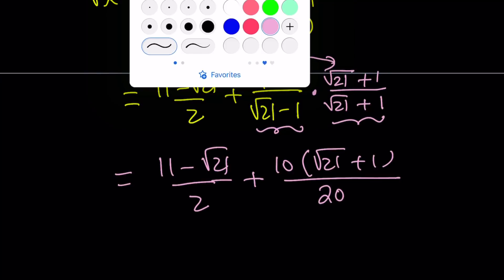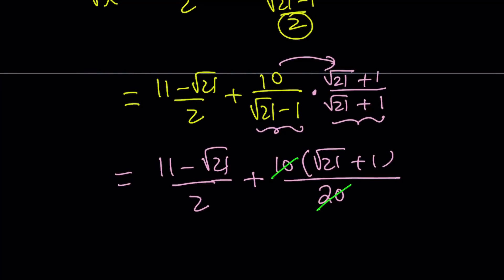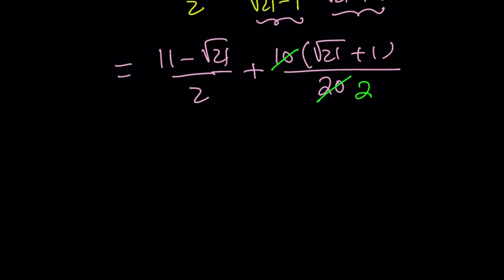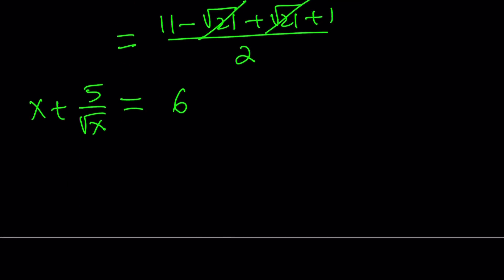We can definitely simplify this. Let's go ahead and simplify. We get a 2 here, which is nice because we don't have to make a common denominator. The numerator becomes 11 minus the square root of 21 plus the square root of 21 plus 1 all over 2. The square root of 21 cancels out. And we end up with 11 plus 1 divided by 2, which equals 6. So my expression, which was given as x plus 5 over the square root of x, is 6. That is the end of the first method.